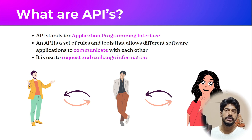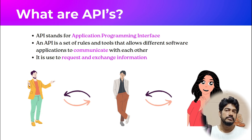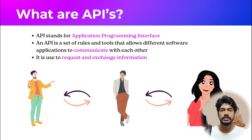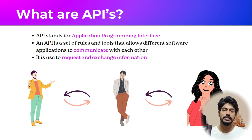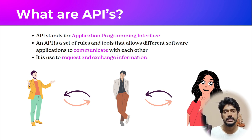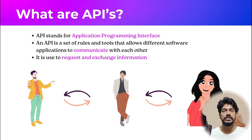For example, going back to our story: consider myself as that boy, there is a girl, and there is a friend. I was hesitant to talk to the girl, so I asked my friend to convey my message. He takes the message and delivers it to the girl. Then based on that, the girl replies to my friend, and my friend replies to me. So here, there is information being exchanged between myself and the girl via my friend. So my friend here acts as an API — that is exactly what an API is. API is basically used to request and exchange information between various systems.